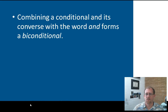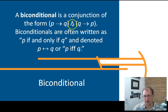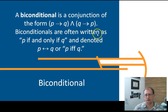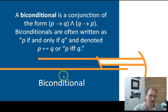Combining a conditional and its converse with the word and forms something called a biconditional. A biconditional is a conjunction in the form of if P then Q and if Q then P. In order for a biconditional to work, both of those have to be true. Biconditionals are often written as P if and only if Q. 'If and only if' really means: if P then Q and if Q then P. Biconditionals are very hard to satisfy.